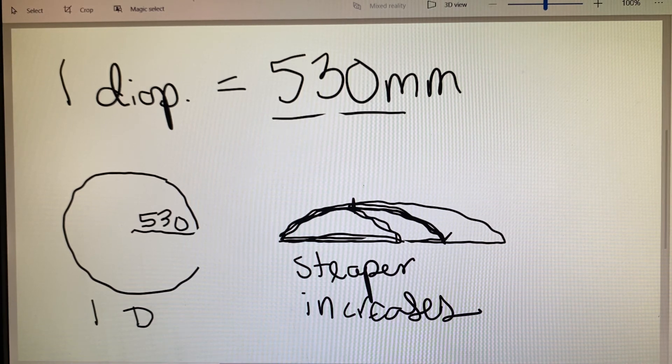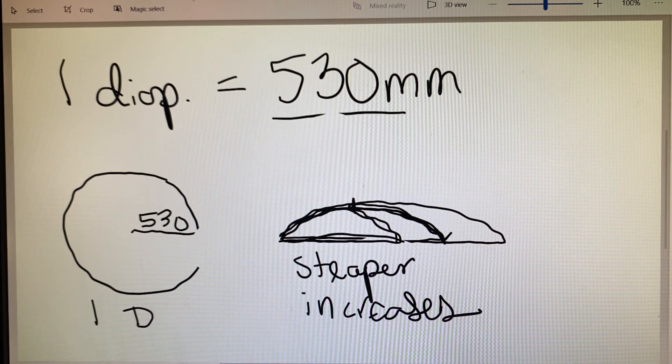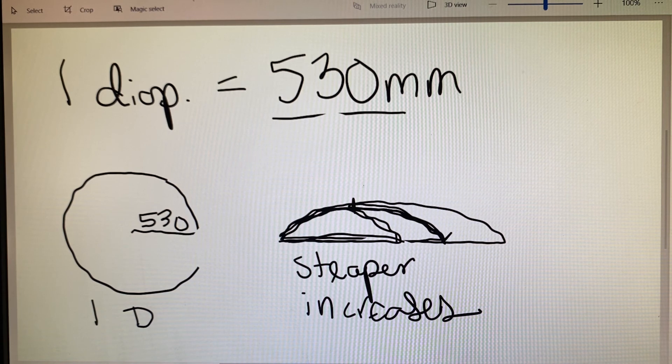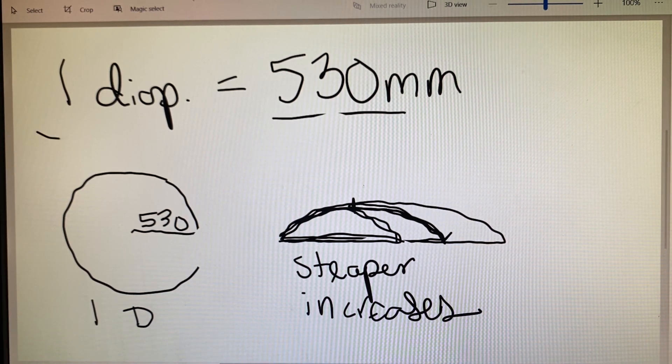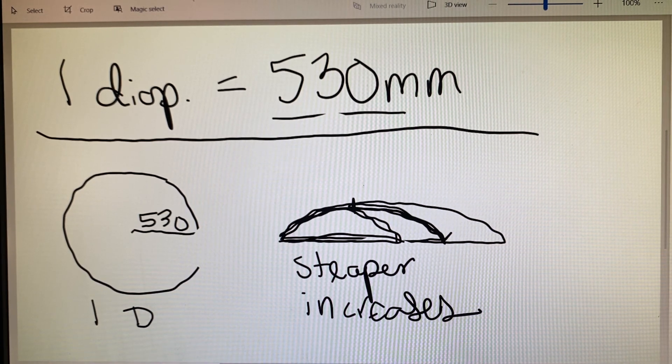So this is our radius of curvature discussion. And again, an increase in diameter decreases the power of the lens. A decrease in diameter will increase the power of the lens. And our rule of thumb says a one diopter lens has a radius of curvature of 530 millimeters.